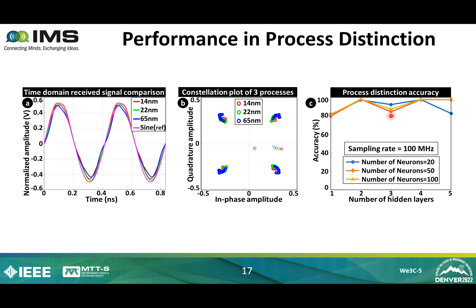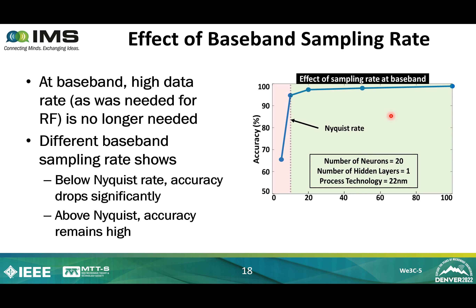We see a worst-case accuracy of 80% and a best-case accuracy of 99%. In general, the average accuracy is close to 90%. Next, we see the effect of baseband sampling rate. After filtering and mapping the RF signal to baseband, we no longer need the high sampling rate. The figure shows that accuracy is very low below the Nyquist rate, which is expected because information is lost below Nyquist. At or above Nyquist rate, the accuracy is more than 95% and increases slightly.